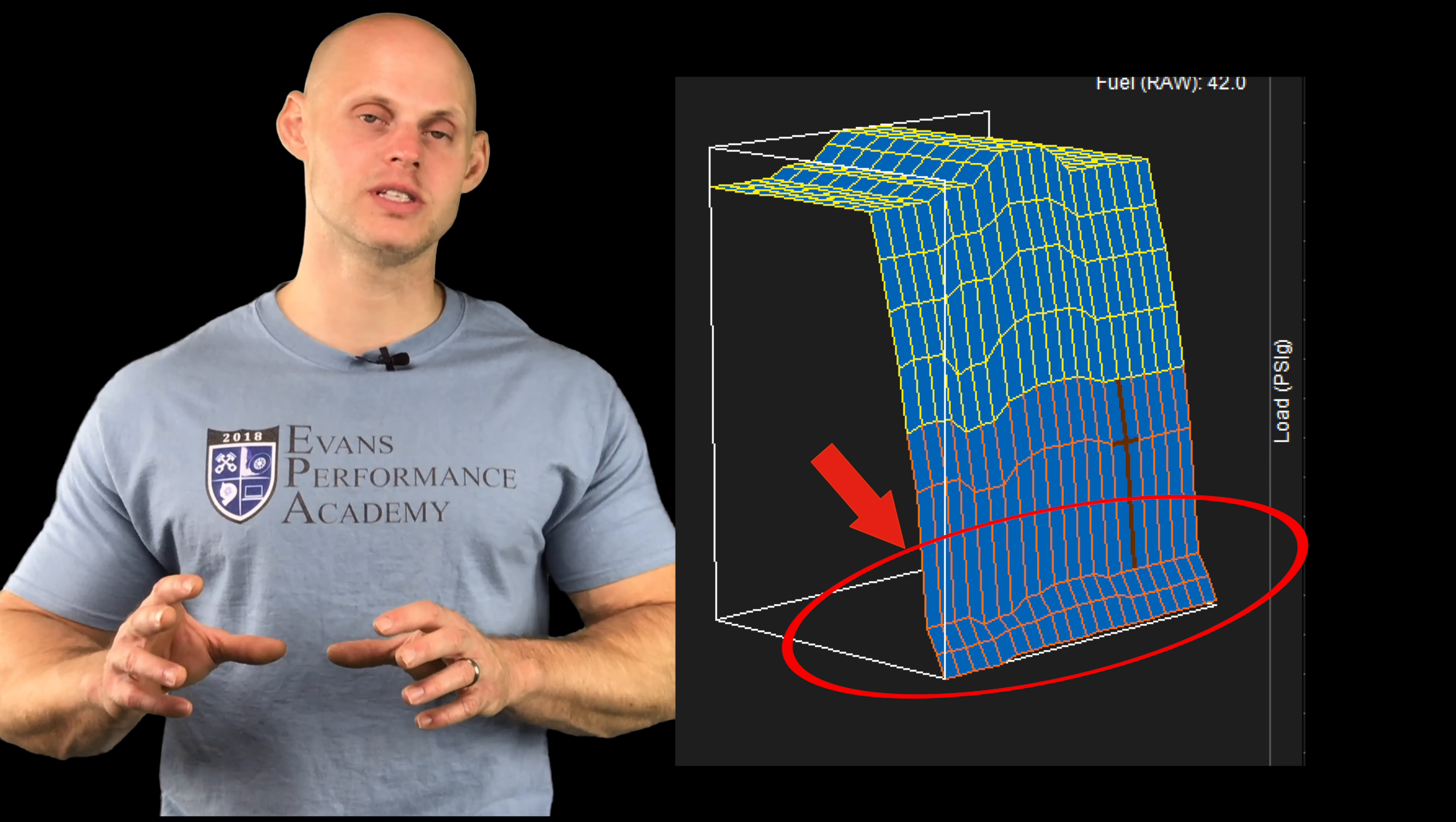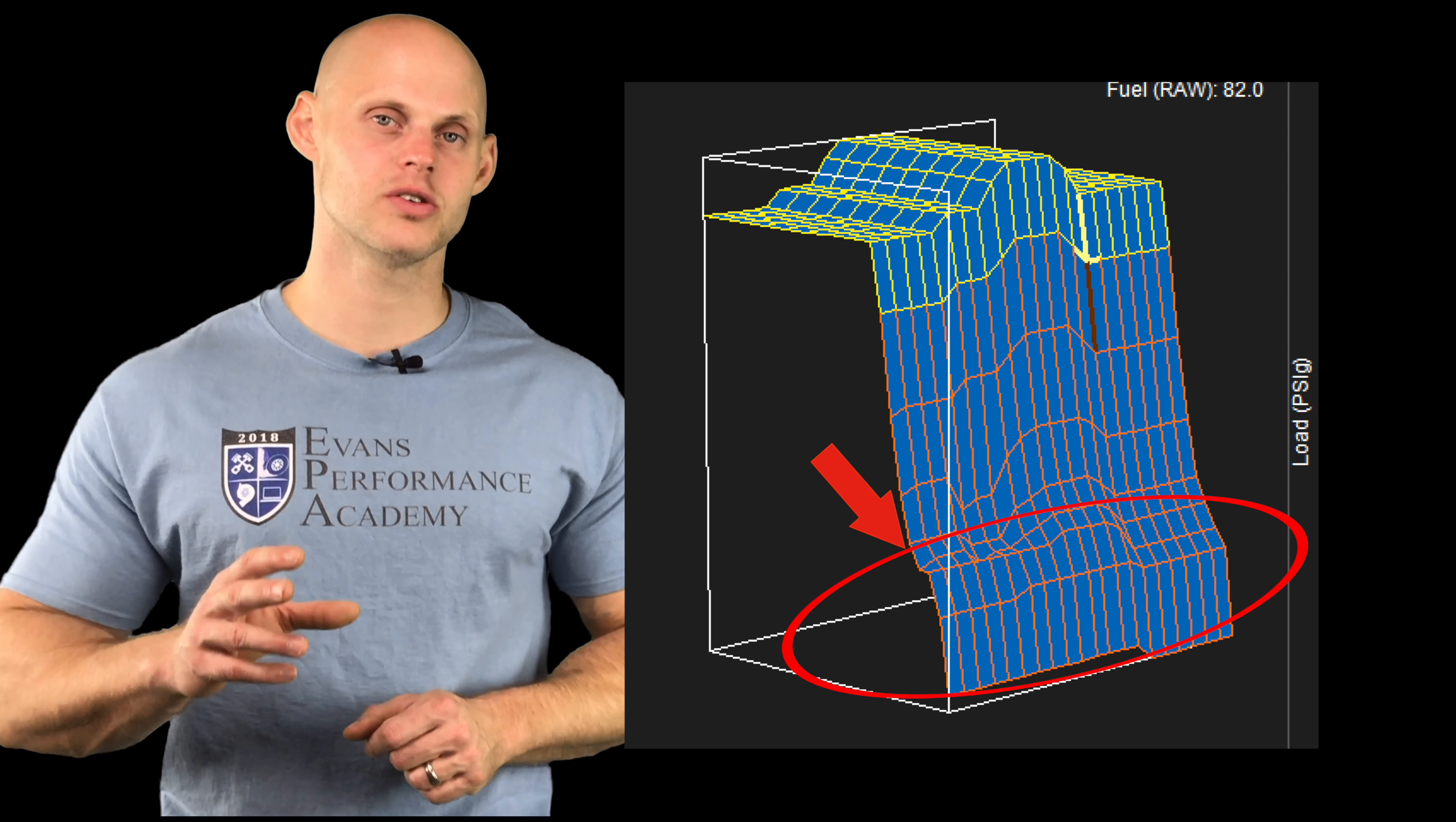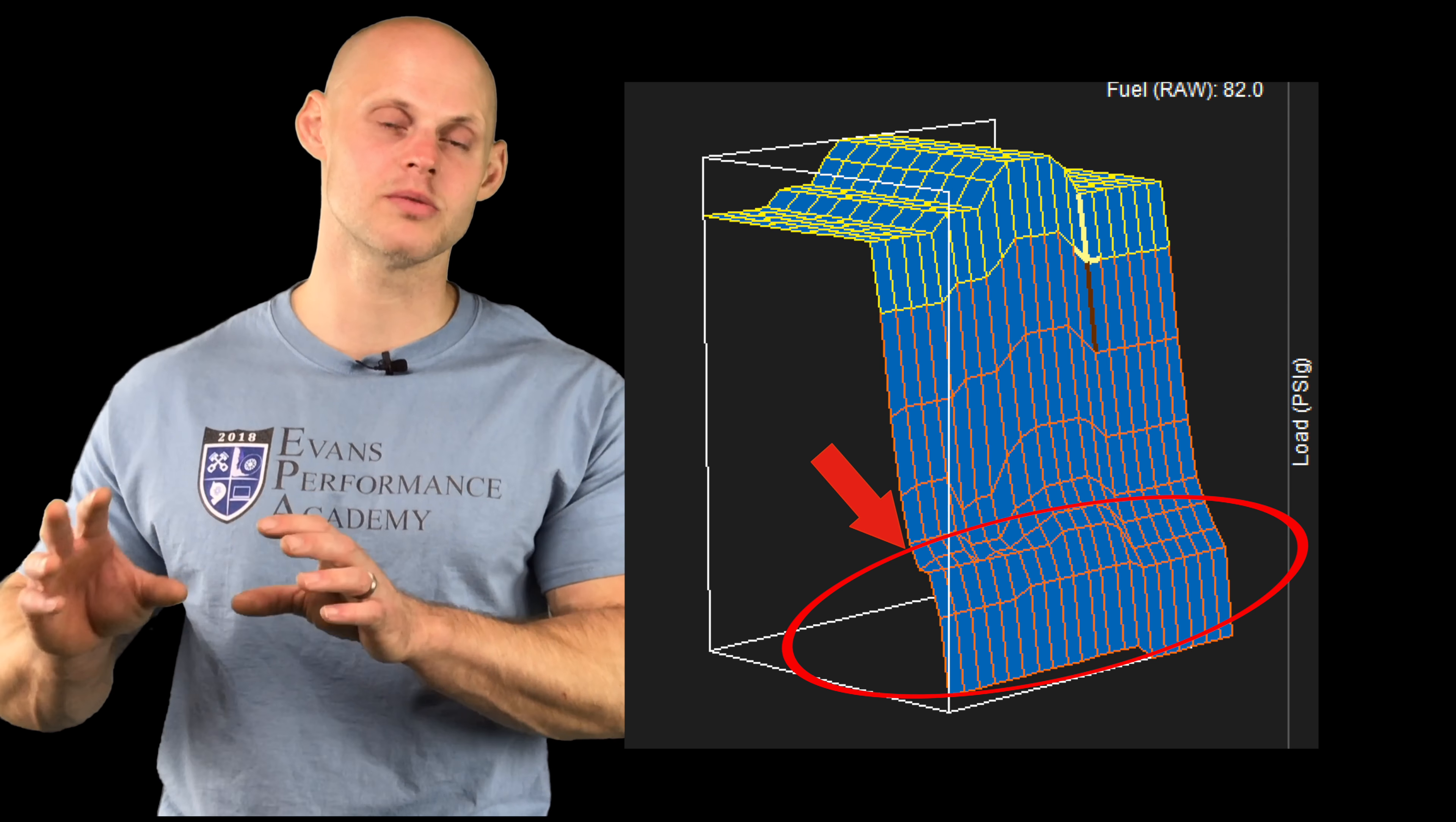It's going to be a dead giveaway if we see that our table looks something like this where the idle is really increased and the part throttle is really increased and it doesn't really linearly flow with the rest of the table if we look at the three-dimensional view.